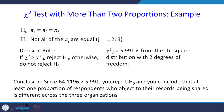The degrees of freedom is (2 − 1)(3 − 1) = 1 × 2 = 2. For 2 degrees of freedom at the given alpha, the critical value from the table is 5.991. Our calculated chi-square of 64.116 is much greater than 5.991, so we reject H₀. We conclude that at least one proportion of respondents who object to sharing their records is different across the three organizations — not all proportions are equal.